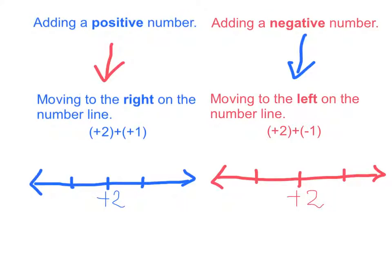If you still remember, when we add a positive number and look at the number line, we move to the right. For example, if I have positive 2 plus positive 1, we first start at positive 2, and then we add 1, so we move to the right by 1 unit. Therefore, the result equals 3, or positive 3.